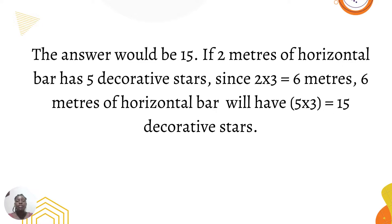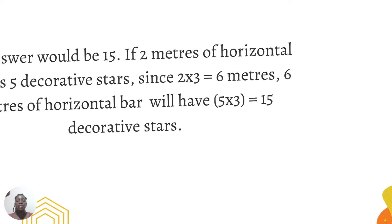If two meters of horizontal bar has five decorative stars, since two times three equals six meters, six meters of horizontal bars will have five times three, which is 15 decorative stars.